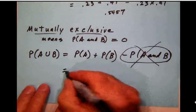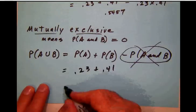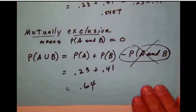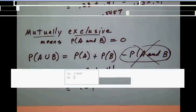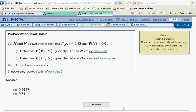So we're going to have our 0.23 plus our 0.41, which is going to be 0.64, and we're done in a flash. So let's go right back over to ALEKS and put that in right there at 0.64, and we are finished with that one.